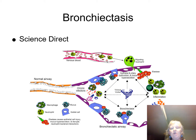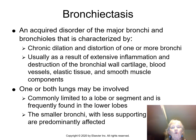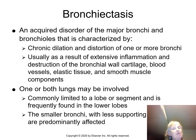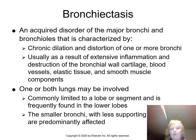Bronchiectasis is an acquired disorder characterized by chronic dilation and distortion of one or more bronchi, resulting from extensive inflammation and destruction of the bronchial walls. It can affect one lung or both lungs. The smaller bronchi with less supporting cartilage are the ones most affected — the further out you get, the less support there is and the easier it is to destroy that tissue.